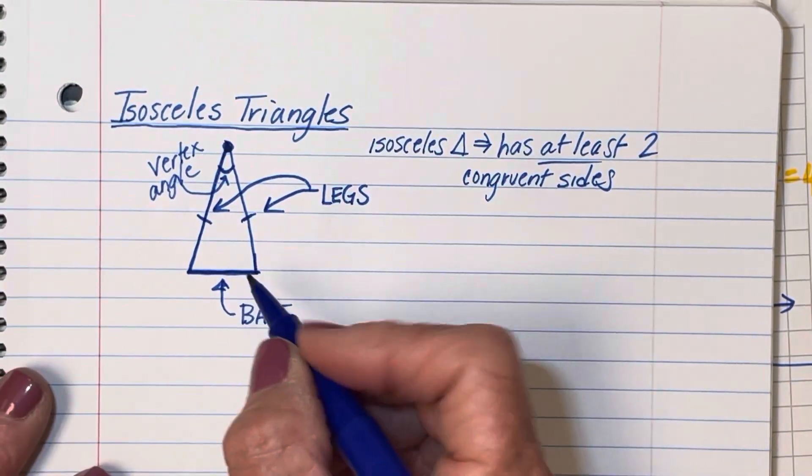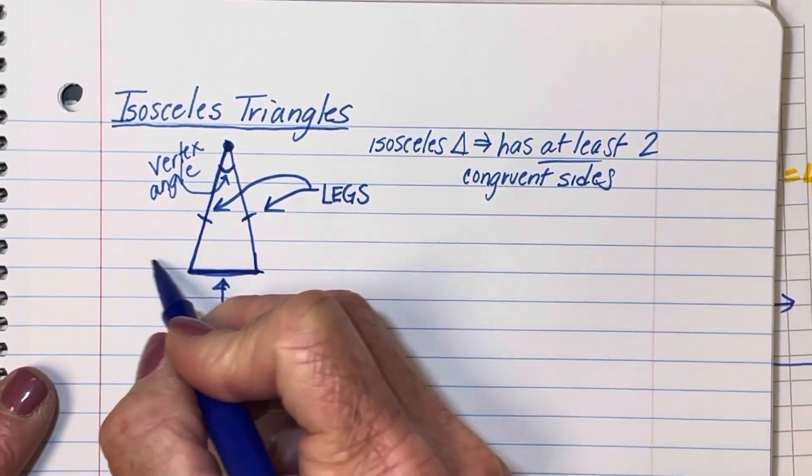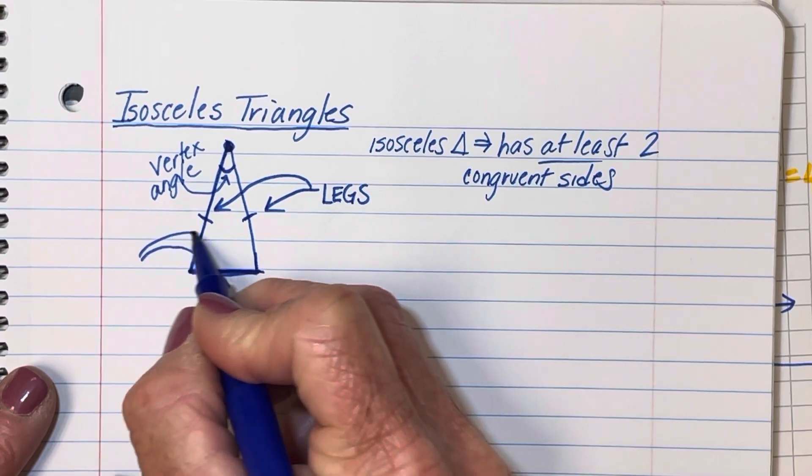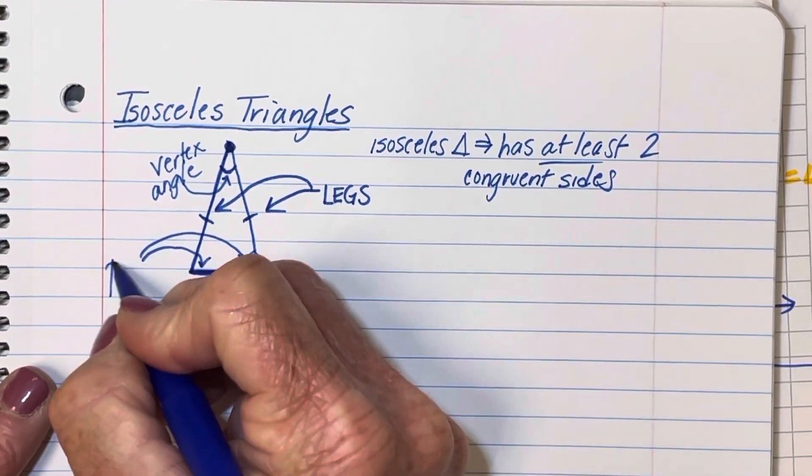And the other two angles along the base are called, you might guess, the base angles.